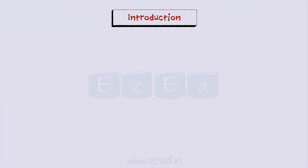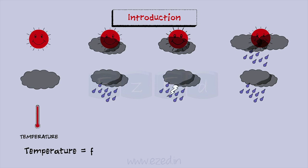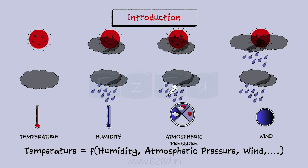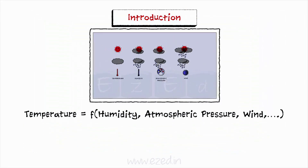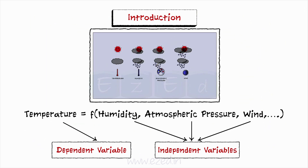Suppose you want to forecast the weather this weekend in Lunavla. We construct a formula for the temperature as a function of several environmental variables like humidity, atmospheric pressure, and wind, each of which is not entirely predictable. Since temperature depends on these variables, temperature is called a dependent variable while humidity, atmospheric pressure, and wind are the independent variables. You would like to see how your weather forecast would change as one particular environmental factor changes, holding all the other factors constant.